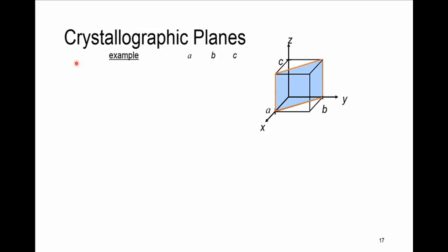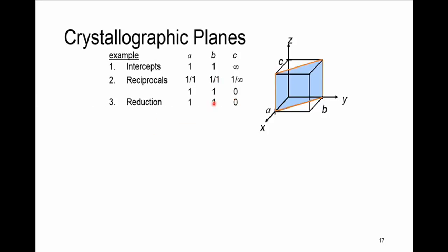Let's find the Miller indices for the blue plane in the cubic unit cell. It intersects X at 1, Y at 1, and is parallel to Z (infinity). Taking reciprocals gives 1, 1, 0. No reduction is needed since these are already the smallest integers. Enclosed in parentheses, the Miller indices are (1 1 0).